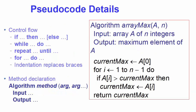To write a function in pseudo code, you write the name of the function and in parentheses the arguments it takes, then in the first two lines you write the input the algorithm takes and the expected output. For control flow you can use expressions like if-then-else, while-do, repeat-until, and for-do. I have already shown you how to use the for-do construct in the array max algorithm.